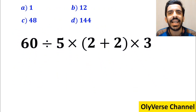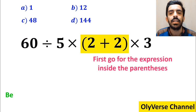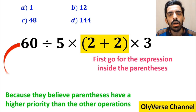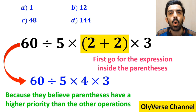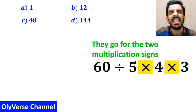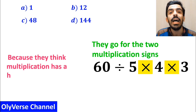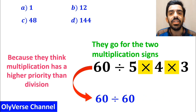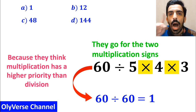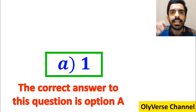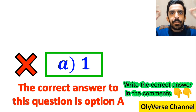Let's watch someone solve it together. Many people, when trying to solve this question, first go for the expression inside the parenthesis, because they believe parenthesis have a higher priority than the other operations. So they simplify this expression to 60 divided by 5 times 4 multiplied by 3. In the next step, they go for the two multiplication signs highlighted in yellow, because they think multiplication has a higher priority than division. So instead of this expression, they write 60 divided by 60, which finally gives them the answer 1. And immediately they conclude that the correct answer to this question is option A. However, this answer is absolutely wrong.